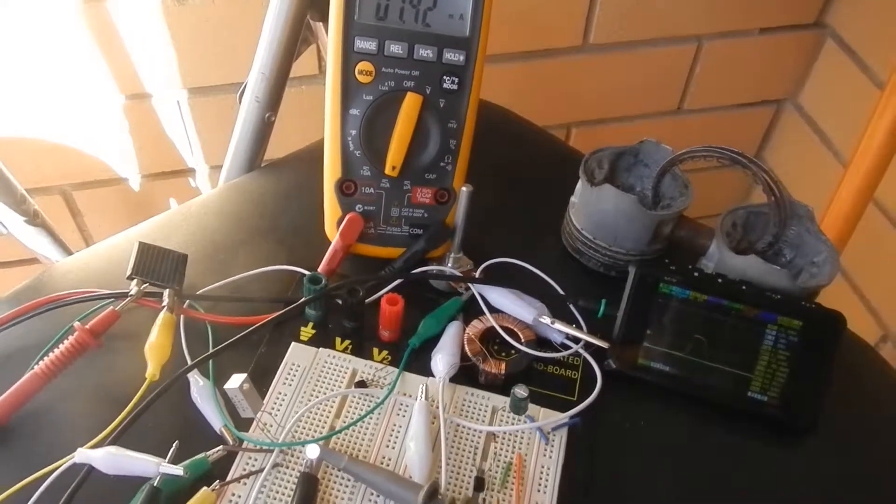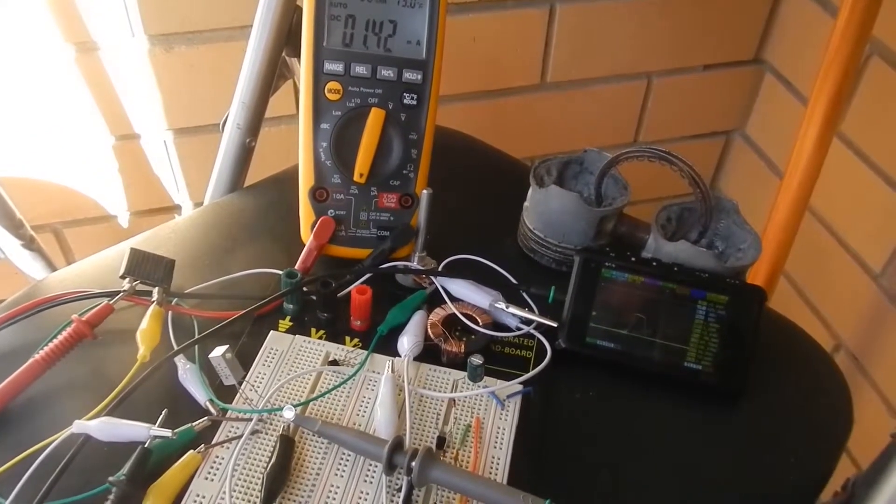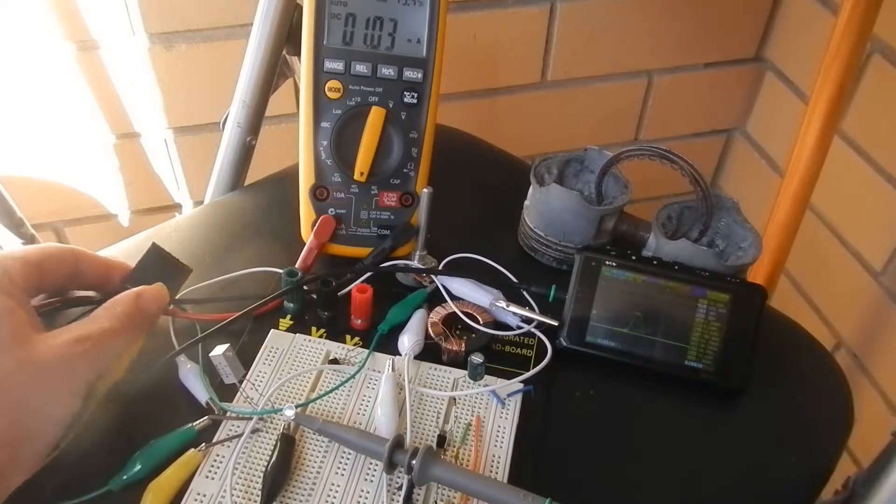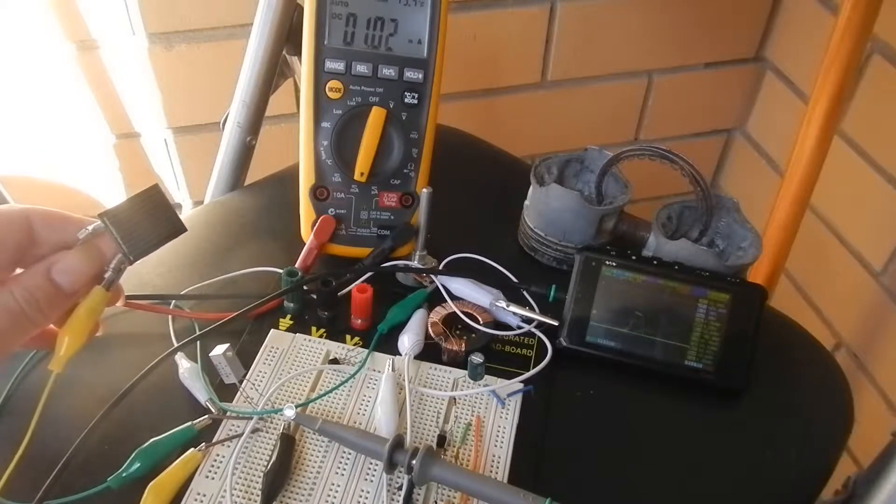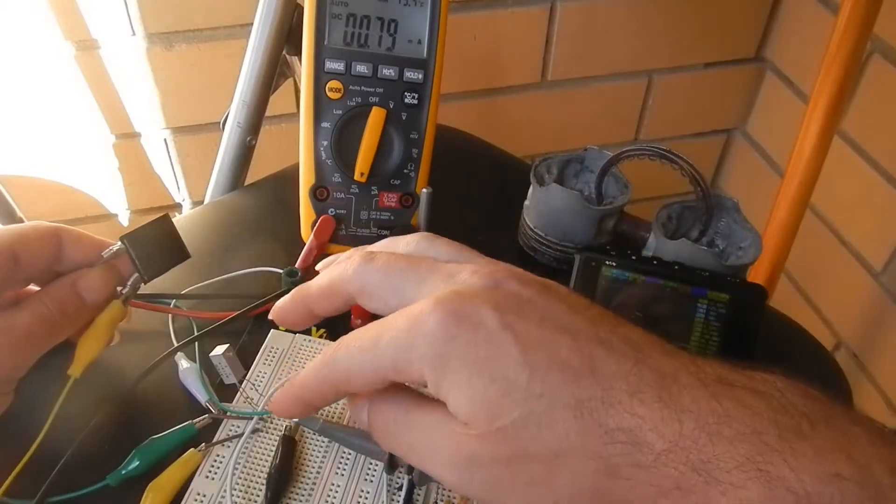G'day again guys, just wanted to show you my latest Joule Thief circuit I've been working on which runs on ambient light. Now I've got a little 1V solar cell here that produces about 50mA max. At the moment we're making around 1mA and as you can see the little LED is lighting up.